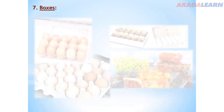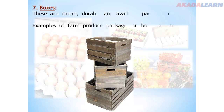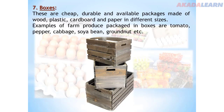Number seven: boxes. Boxes are cheap, durable and available packages made of wood, plastic, cardboard and paper in different sizes. Agricultural produce like tomato, pepper, cabbage, maize, cowpeas, soybeans and groundnut can be packaged in boxes.